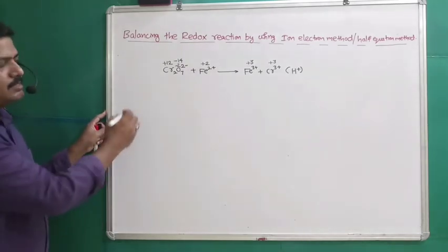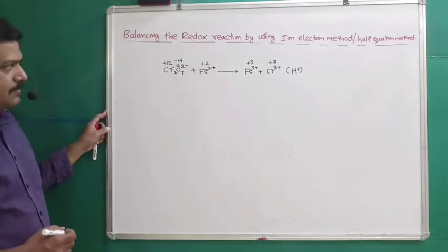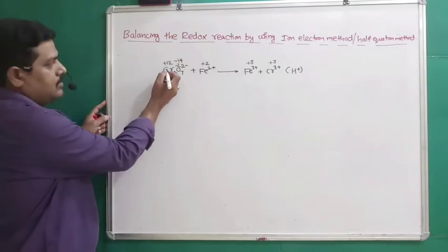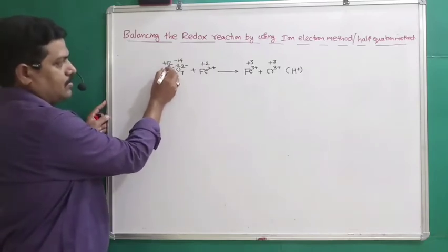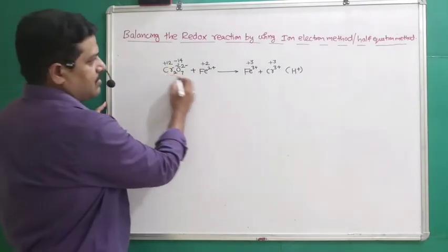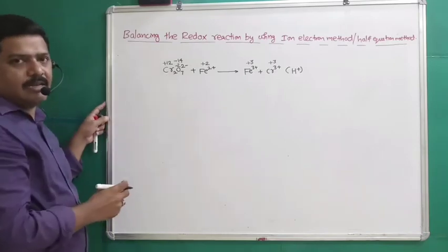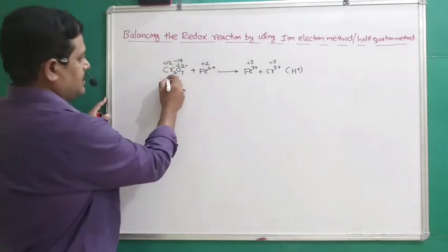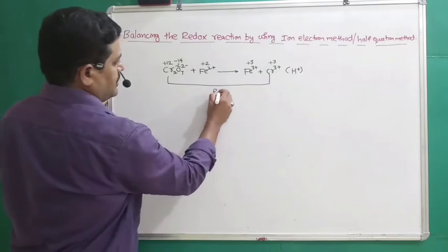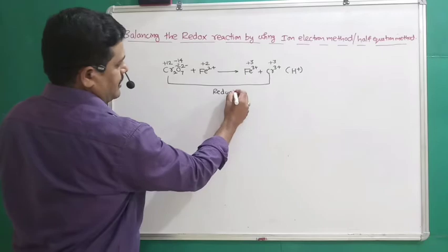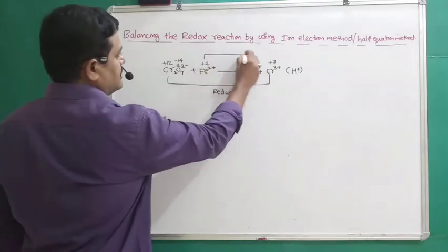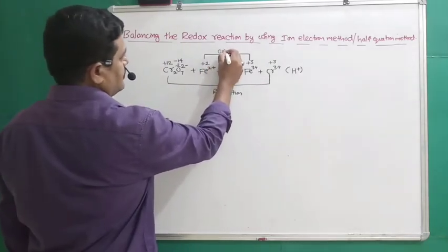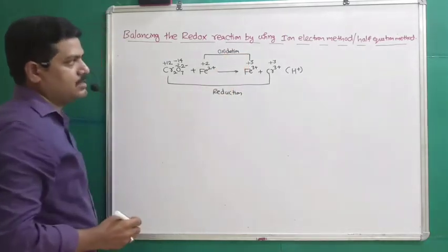This equation needs to be split into two halves. For chromium, there is a decrease in oxidation state — for 1 chromium the oxidation state is +6, converting into +3. A decrease in oxidation number is called reduction, so this is the reduction half-reaction. For iron, there is an increase in oxidation state — +2 converting into +3 — which is called oxidation. This is the oxidation half-reaction.